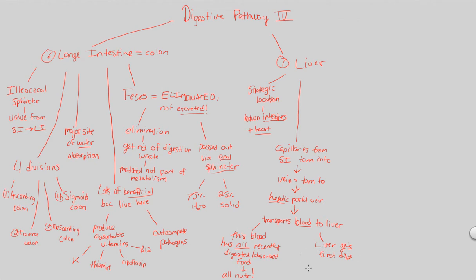Liver gets first dibs to the absorbed nutrients from the intestines. Now, why does the liver get this right? The reason why is because the liver has the following functions. Let's take a look.